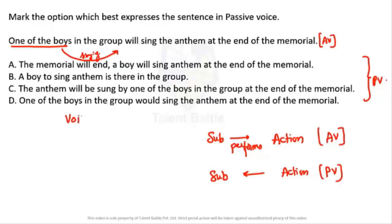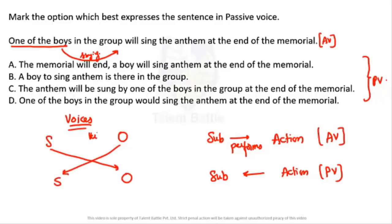In conversion of voices, the subject goes to the object's place, the object comes to the subject's place, and the verb becomes the V3 form — the past participle. If there is an object, we also add the word 'by.' In this question, the subject is 'one of the boys in the group' and the object is 'the anthem.'